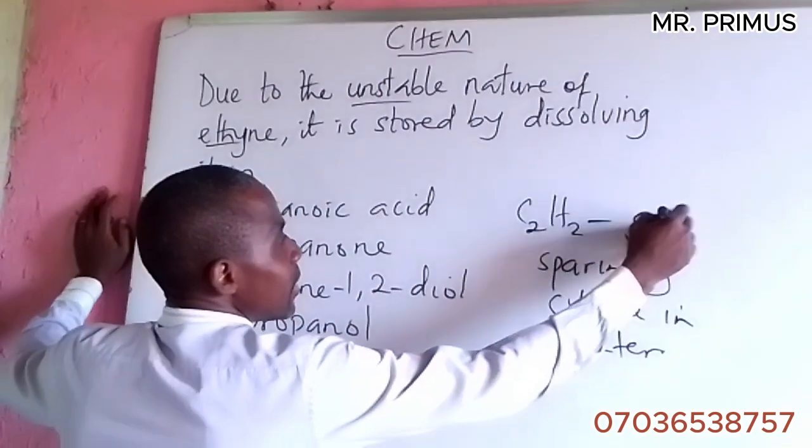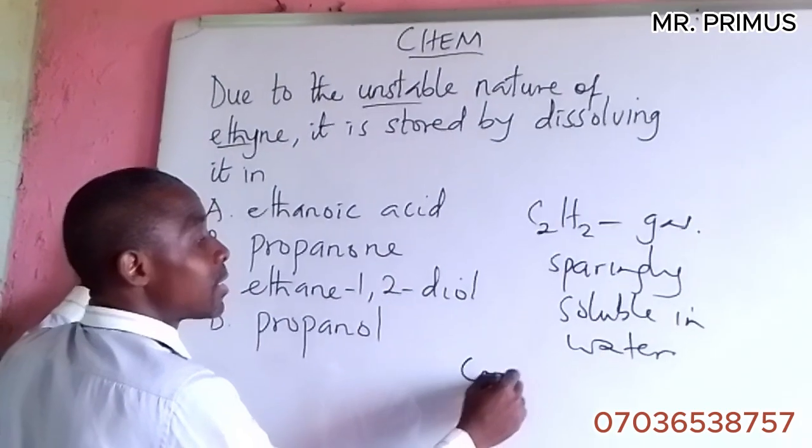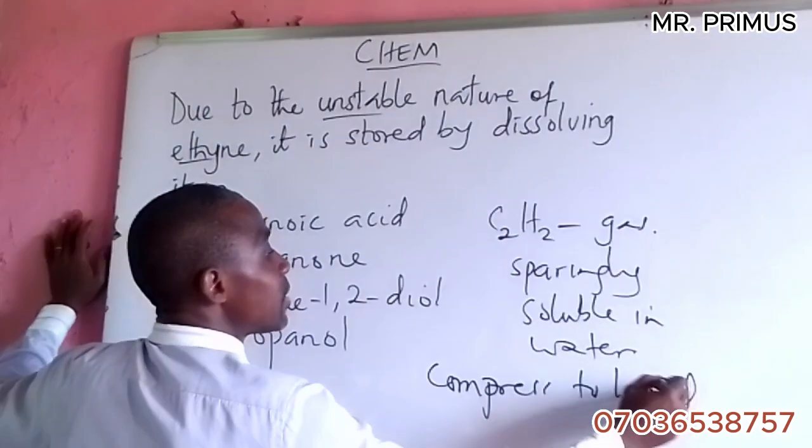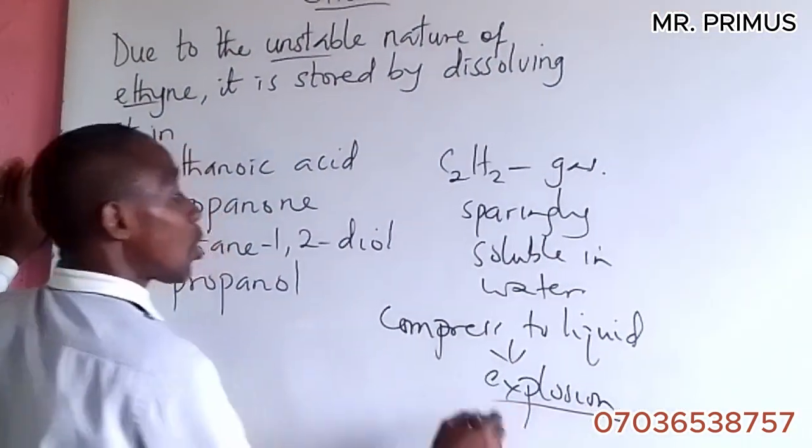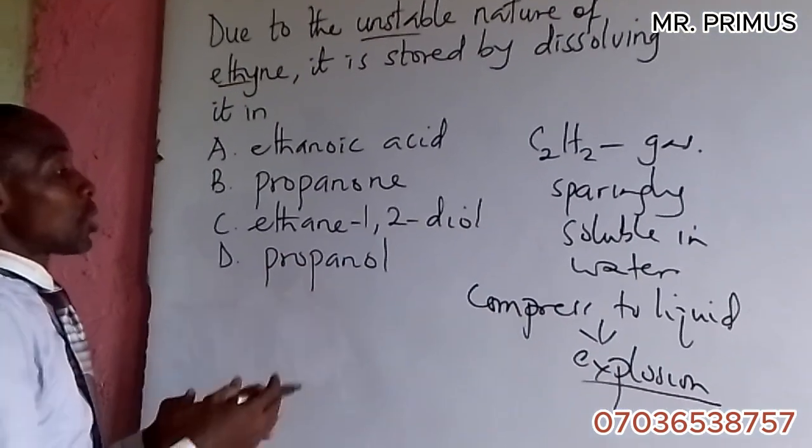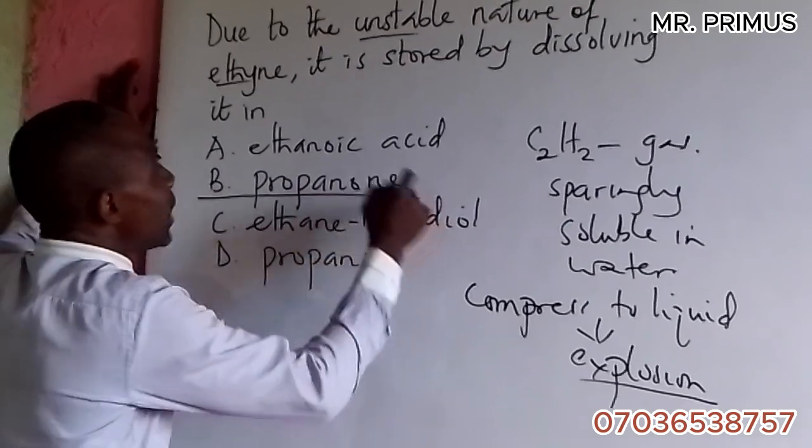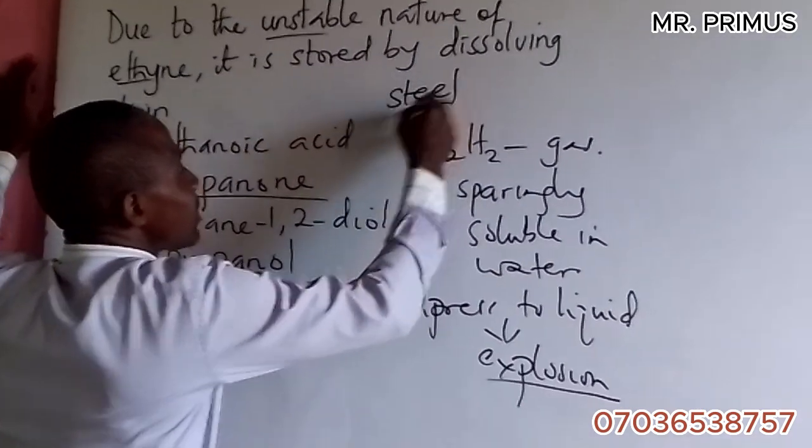Ethyne is sparingly soluble in water. It's a gas. If you try to compress it to liquid, this will cause explosion. So the best thing to do is to store it in propanone in a steel cylinder.